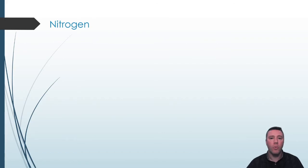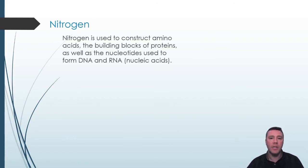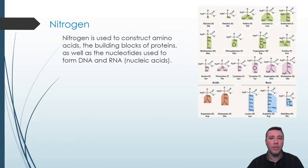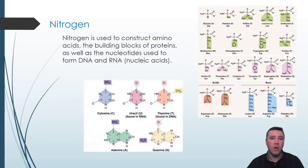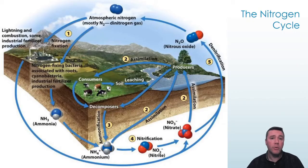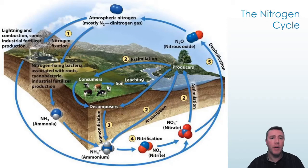The second cycle we're going to explore involves nitrogen. Nitrogen is found in the amino acids that are used to construct proteins. Nitrogen is also necessary in the formation of the nucleotides that are used to build DNA and RNA. Like carbon in the carbon cycle, nitrogen cycles between living things and the environment as well. By far, the largest repository of nitrogen is the atmosphere — Earth's atmosphere is comprised of a number of gases, 78% of which is nitrogen.